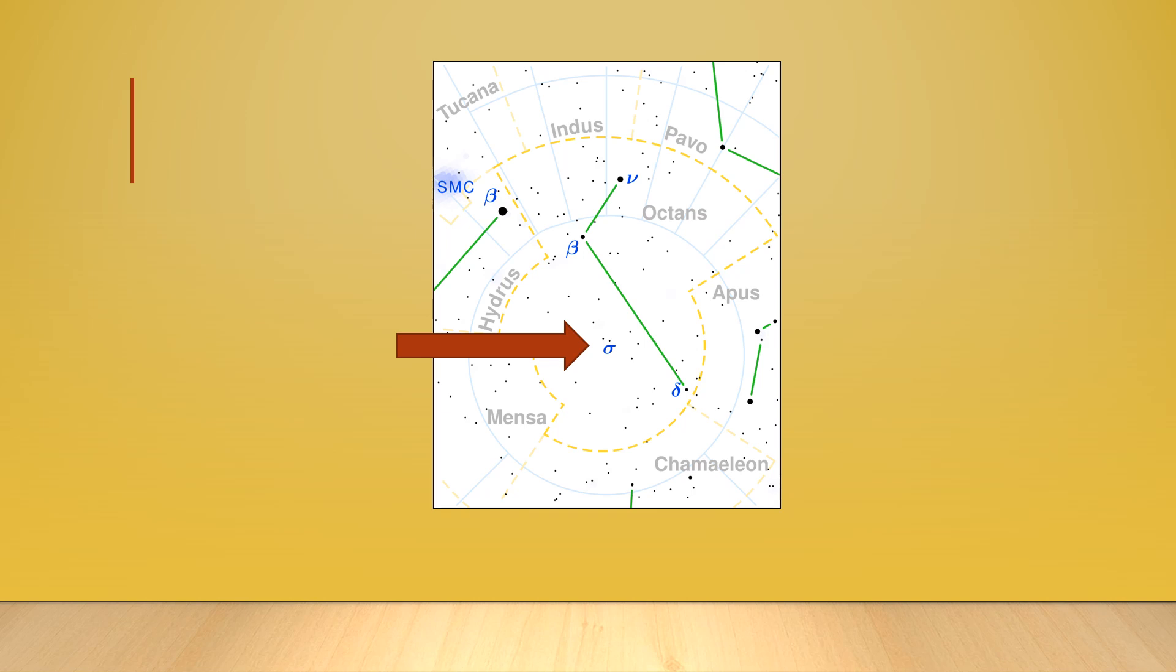Sigma Octantis is a very dim south pole star, barely visible to the eye from dark skies.